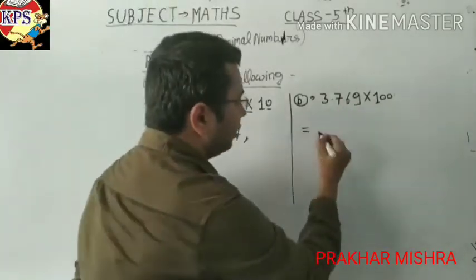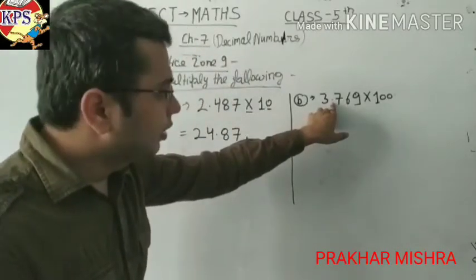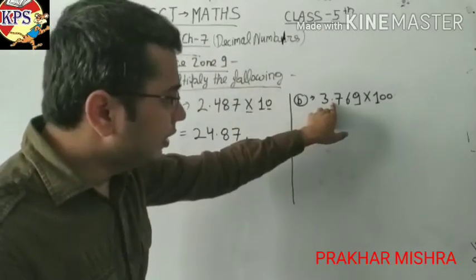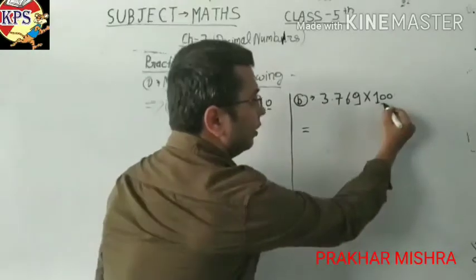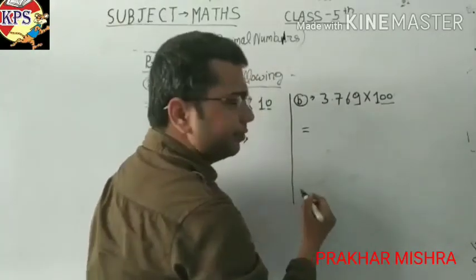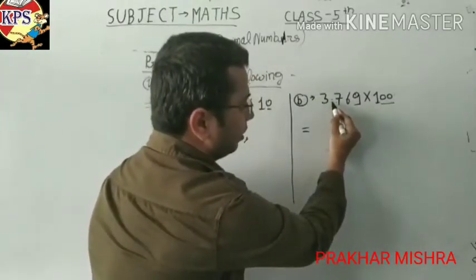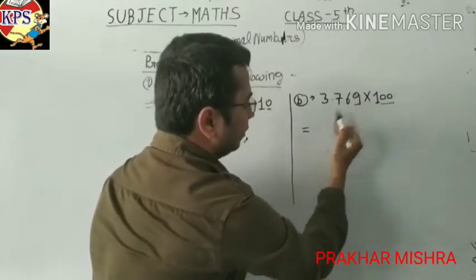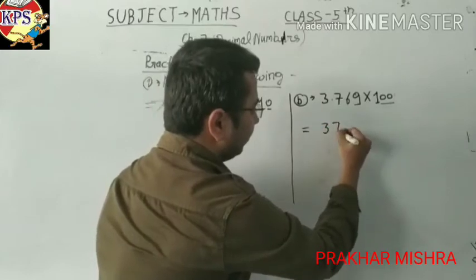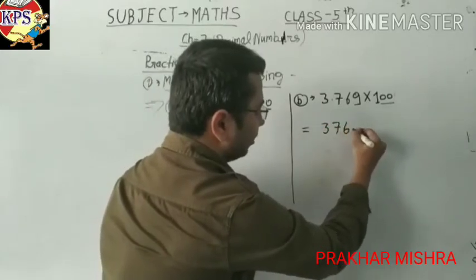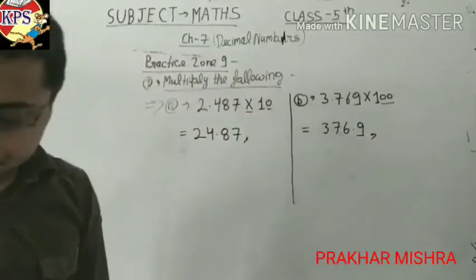In this condition, the point is given after three digits and because two zeroes are given here, we will shift the point after two numbers. So: three, seven, six, point, nine — 376.9. This is very simple.